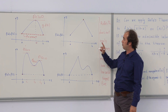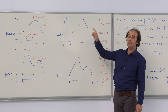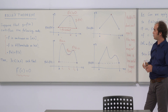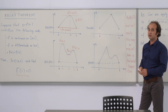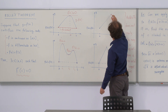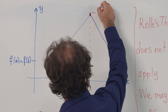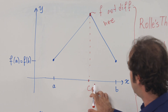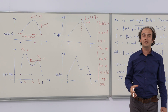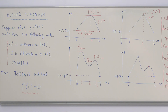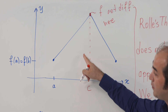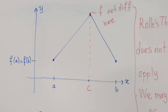Let me illustrate this. This is an example in which the function f, drawn in the figure, is not satisfying one of the conditions of Rolle's theorem. The function has equal images at the endpoints, so the third condition is satisfied. It looks like a quite continuous function, so the first condition is also satisfied. But the function fails to be differentiable at that point c — therefore, Rolle's theorem does not apply here, and by using it you cannot conclude anything.